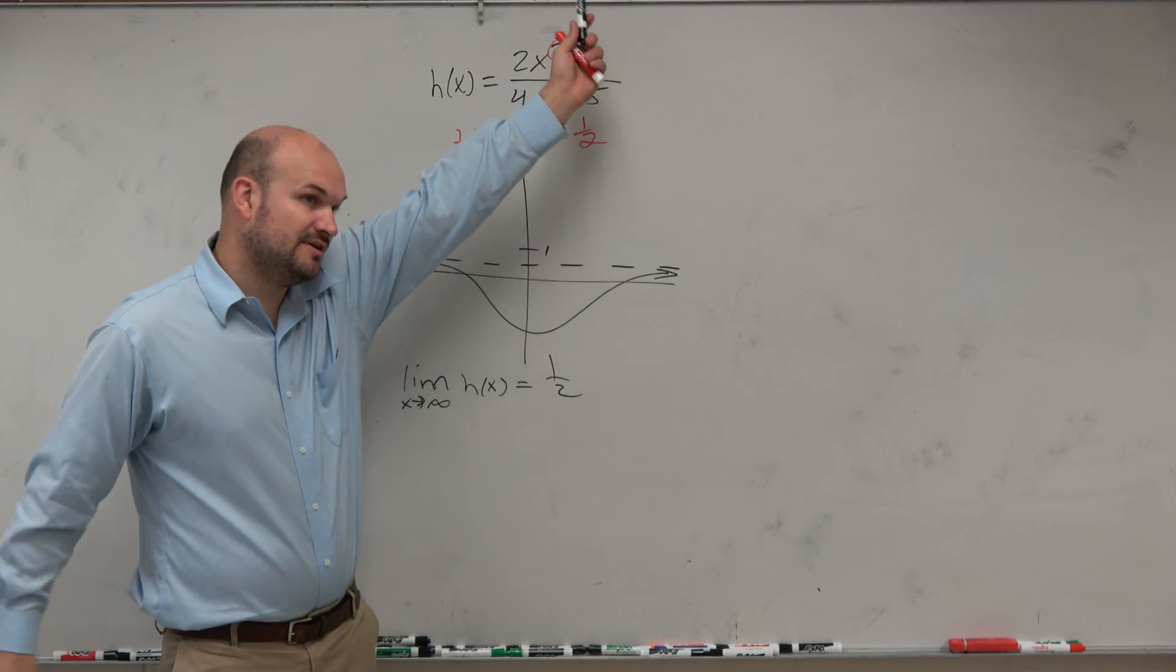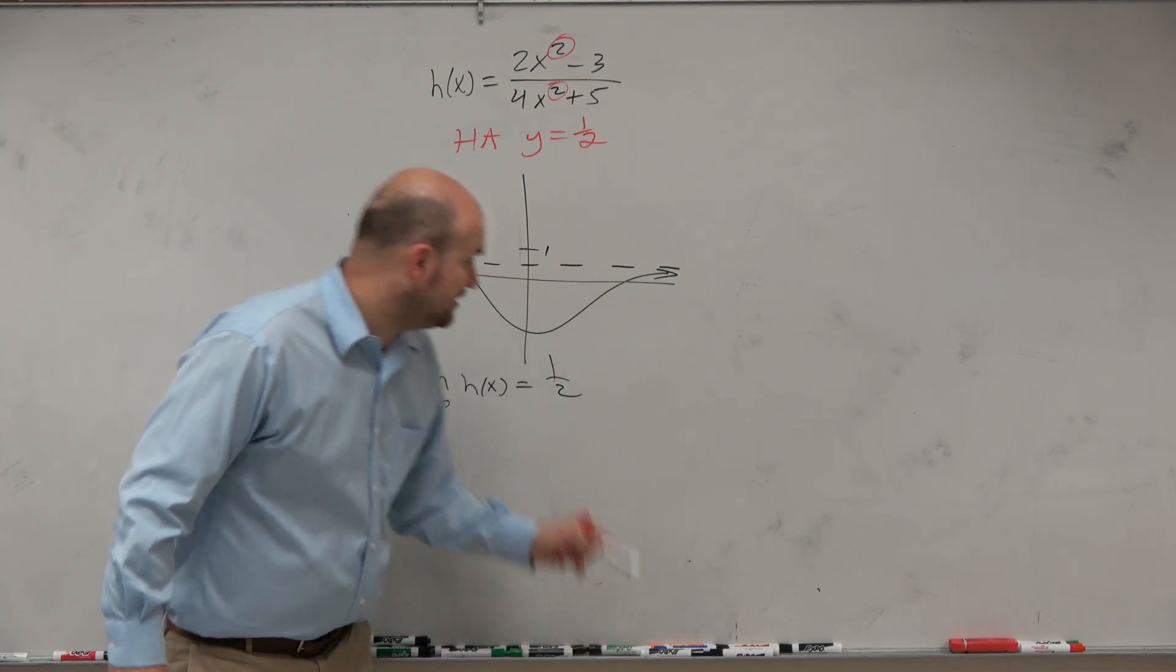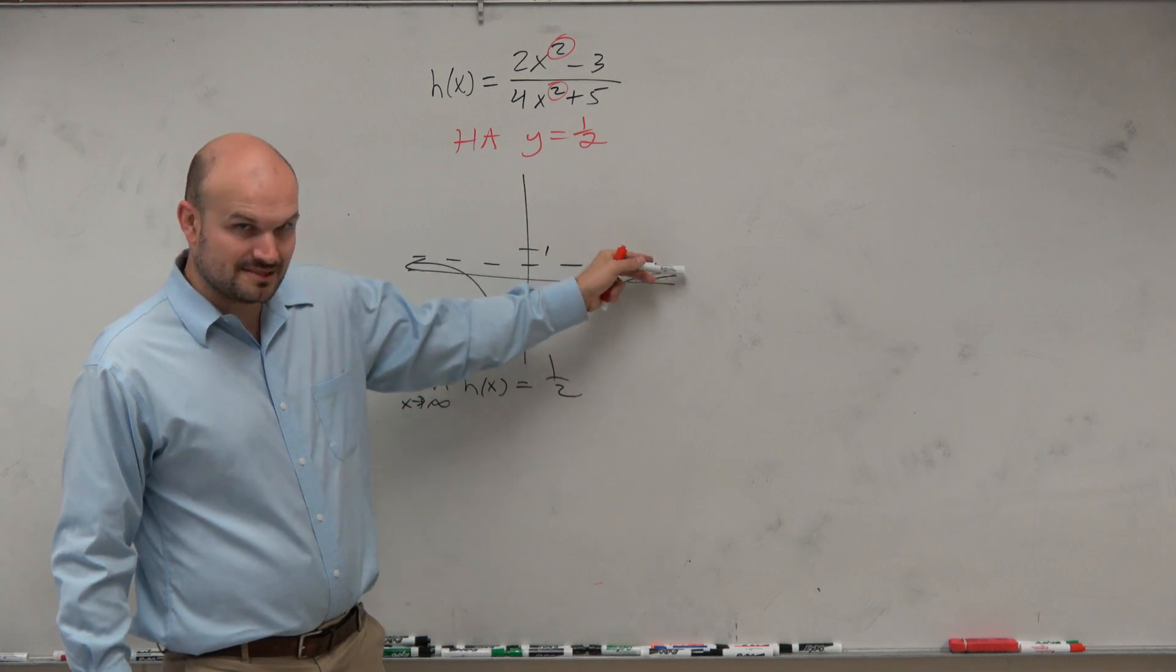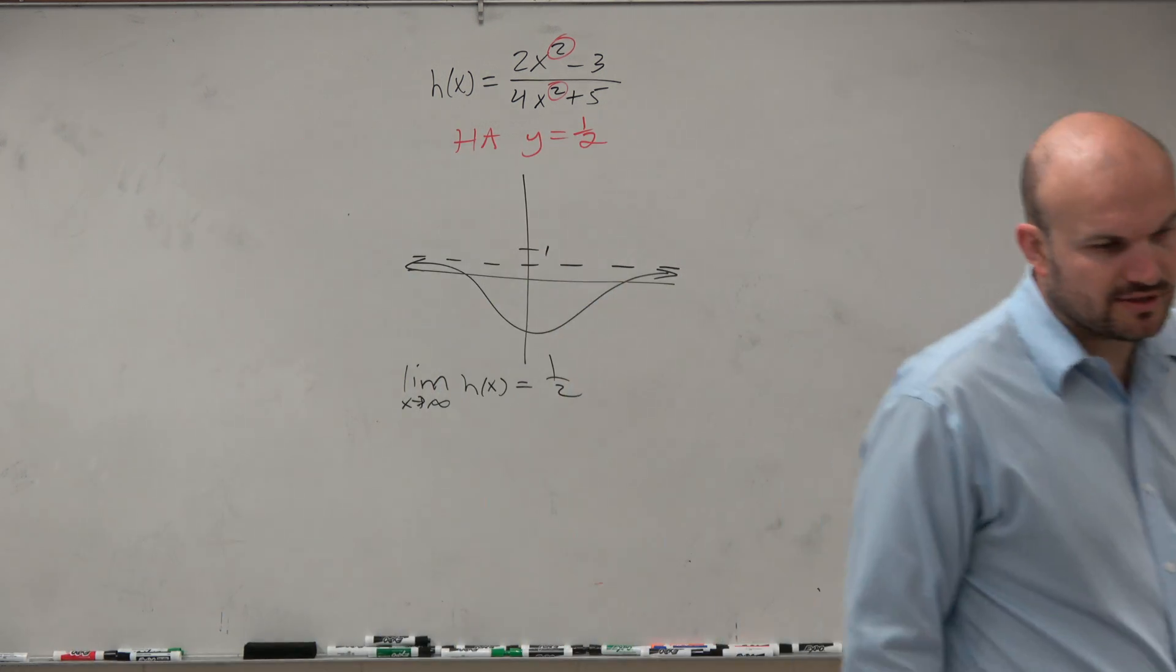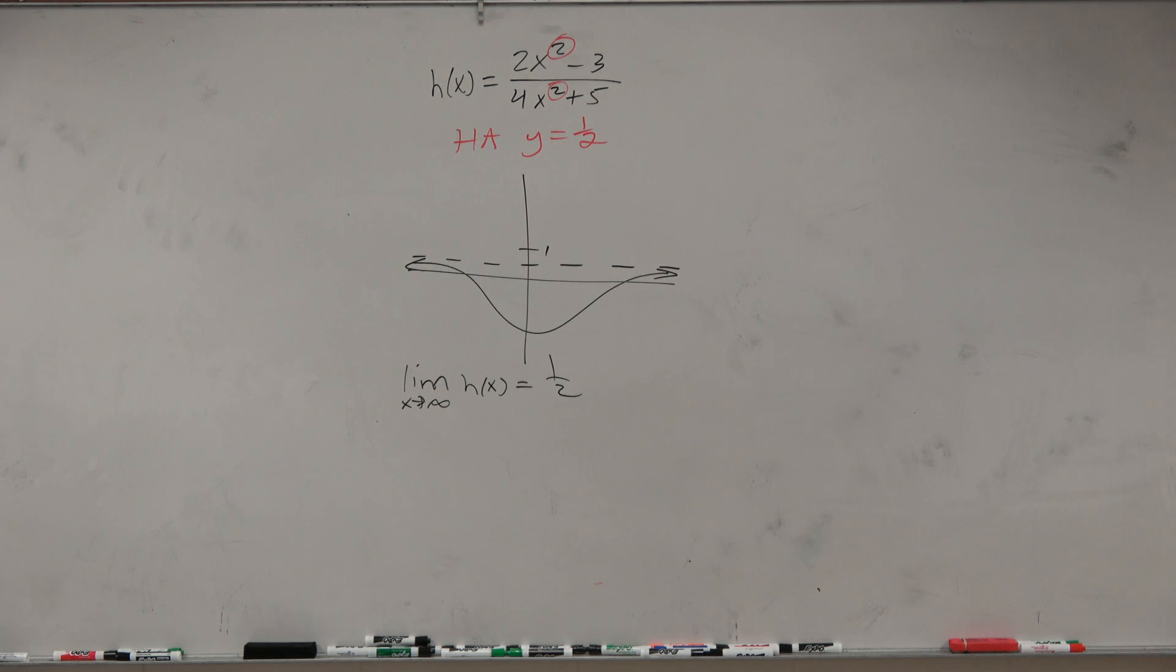So we're not going up to infinity, we're not going down to negative infinity, we're approaching our horizontal asymptote. So that's just another thing for you guys to pay attention to - it goes up very close.